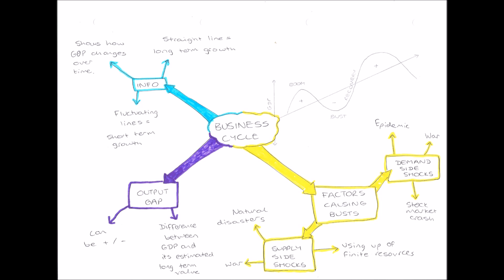And finally in our bottom left we have this idea of output gap. The output gap is the difference between short term GDP and its estimated long term value. So that is the difference between the fluctuating, going up and down line on our business cycle and our straight line.